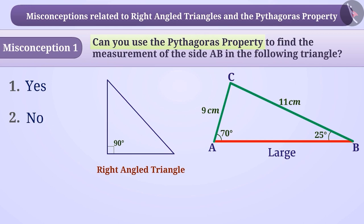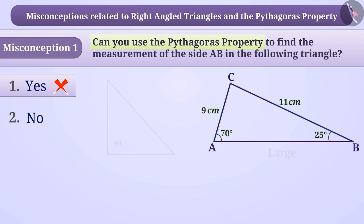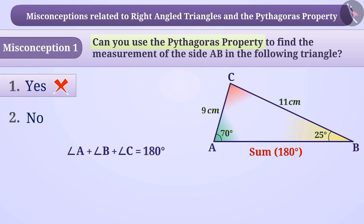Due to this misconception, they give the answer as option 1, which is an incorrect answer. We know that the sum of the three interior angles of a triangle is 180 degrees. That is, angle A plus angle B plus angle C is equal to 180 degrees.